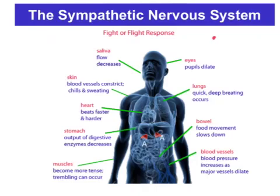Pupils will dilate so that more light can enter the eye and we can see threats more clearly. But other functions that are not essential for survival will shut down or decrease — salivation, bowel movements, urine production — so that our resources can be maximized elsewhere, thus maximizing our chances for survival in a threatening situation.